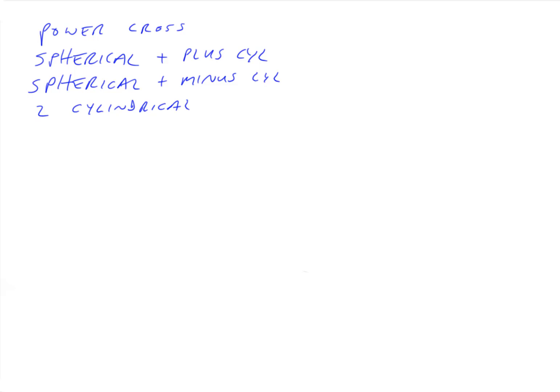These are the next few lectures. The lecture we're doing now is number two — the spherical and the plus cylinder. The next lecture will be number three, and then the next lecture will be number four. There are four different ways of saying the same thing, four different ways of building this same idea of plus three and plus five — or minus two and plus four, or any Toric system that we want.